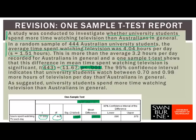Next, we interpret the 95% confidence interval. You need to be really careful with how you express this — the 95% confidence interval is talking about the population, all university students. You need to be sure your interpretation doesn't sound like you're talking about the sample. Finally, we finish with a conclusion explicitly relating findings back to the original hypothesis. Notice the language must be careful: saying 'the university students spent more time watching TV' would sound like you're discussing just the 444 students in the sample, not all university students. We say 'university students spend more time watching television than Australians in general' to make clear we're talking about the population.